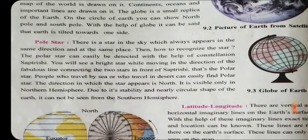People who travel by sea and who travel in the desert can easily find the polar star. The direction in which the star appears is north. As we have already read, the polar star is found in the same direction and that direction is the north side. If you look at the north side, you will see the polar star. It is visible only in the northern hemisphere.